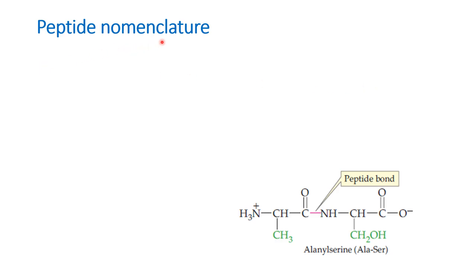A peptide is a compound of two or more amino acids. The simplest of all peptides is a dipeptide, wherein one amino acid combines with another amino acid to form an amide bond. The amide bond is called a peptide bond.